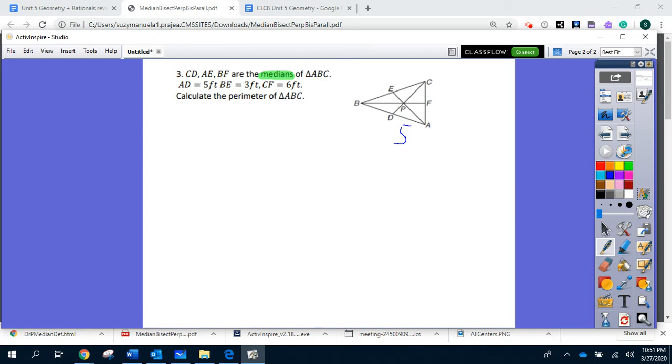Then BE is three feet. BE is three and also CF is six. CF is six. Because we have many data in geometry, it's very useful to annotate the information on the figure.